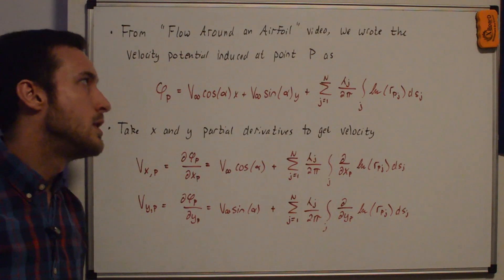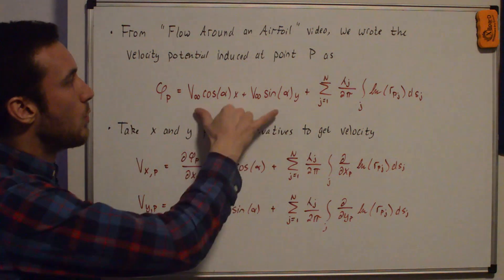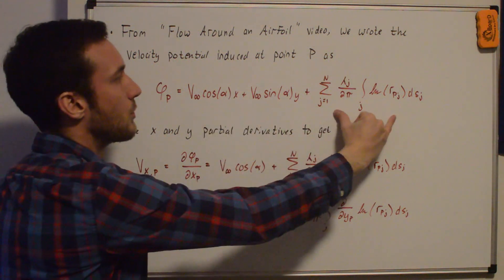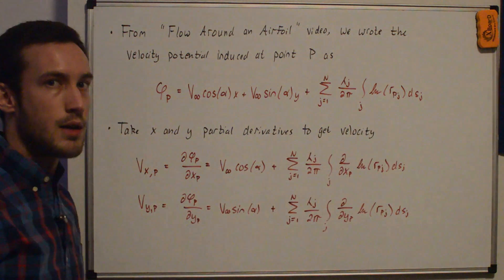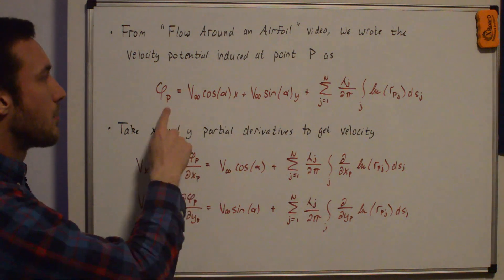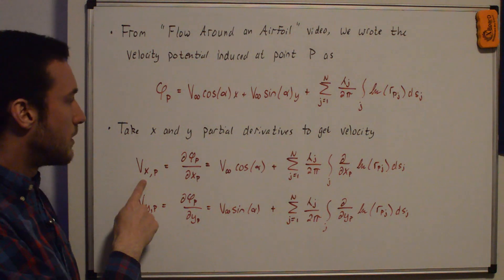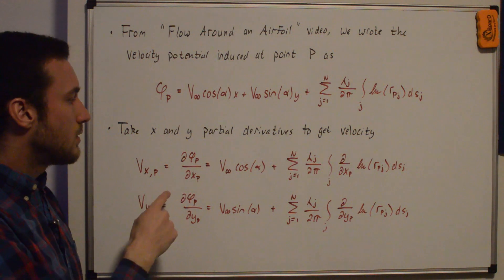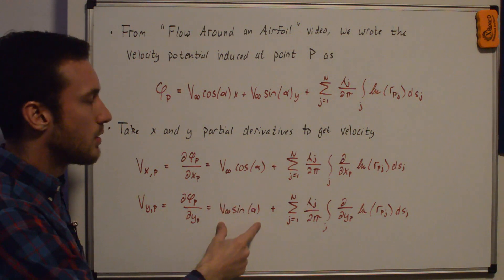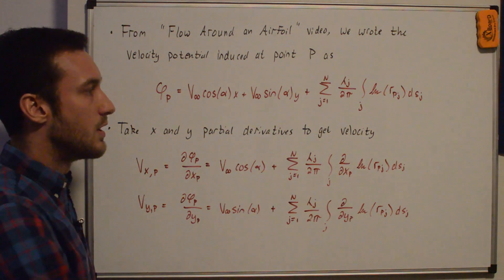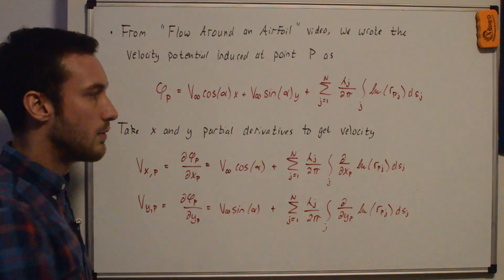From my flow around an airfoil video, we wrote the velocity potential induced at point P as phi_P, with the uniform flow term and the source panel term. Note that this uses RPJ instead of RIJ because we're finding the velocity potential at a point P in the flow field. To get the X and Y velocity components we take the partial derivatives of the velocity potential with respect to X or Y, giving us the uniform flow term and the source panel term — similar to the normal and tangential velocity components but with different partial derivatives.